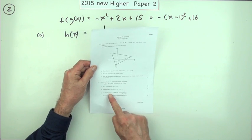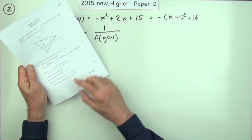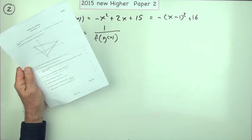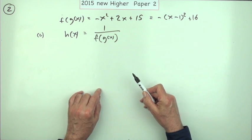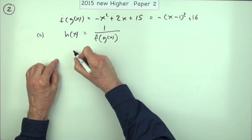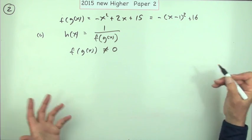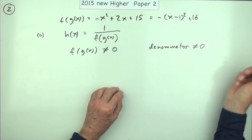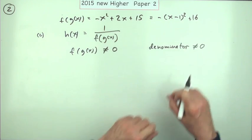And finally part c. Another function h is given by 1 over f of g of x. I just have to watch the wording of this because it's always that thing to do, the domain. What values of x cannot be in the domain? Well, f of g of x was either this or this, it doesn't matter which it is, so I'll just call it that. You can't divide by zero, which means that f of g of x cannot be equal to zero, or you could say cannot divide by zero, or you could say the denominator cannot be zero. Well that means you've got a choice of two ways of finding this. You could either use this form of it or this form of it. Whichever might be faster.